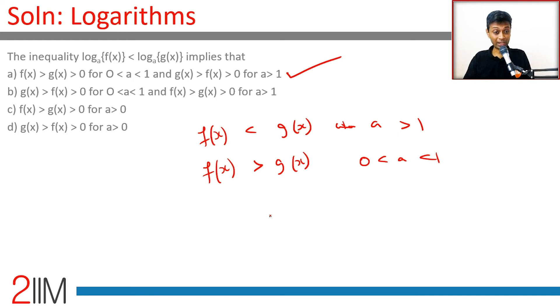If the base were less than one, then the inequality would reverse. If the base were greater than one, the inequality would behave itself - the log inequality and the variable inequality would be the same.